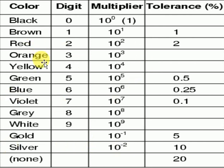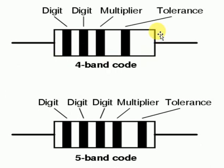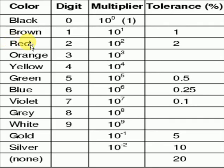Now, in case of a 4-band code: the initial 2 bands represent the digits, the third band represents the multiplier, and the fourth band represents the tolerance. For example, if the initial 2 colors are brown and red, the digit is 12. If they are orange and blue, the digit is 36. If the third band is yellow, the multiplier is 10^4.